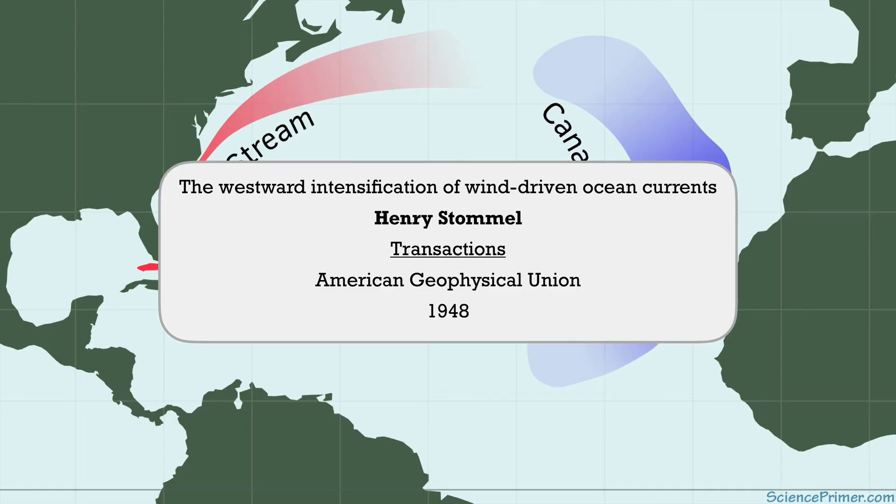In this paper, he argued that since these western boundary currents are a common feature of all ocean basins, their formation was independent of local topological features. So the physical basis of their formation could be modeled in a simpler system.